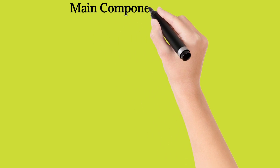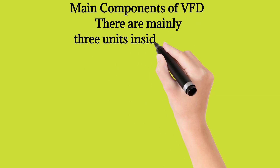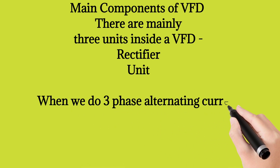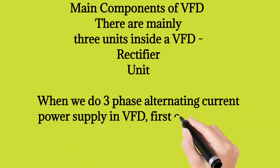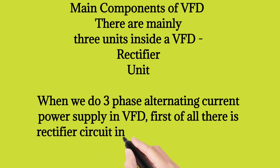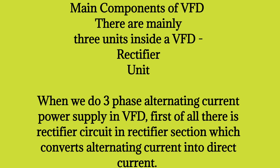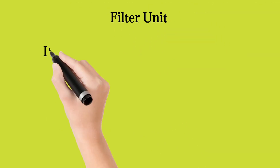Main components of VFD: there are mainly three units inside a VFD. First, the rectifier unit. When we supply three-phase alternating current power to VFD, first of all there is a rectifier circuit in the rectifier section which converts alternating current into direct current. The filter unit has a capacitor which eliminates the ripples produced by the direct current, because when AC is converted into DC in the rectifier section, it does not completely convert, hence some ripples are generated.